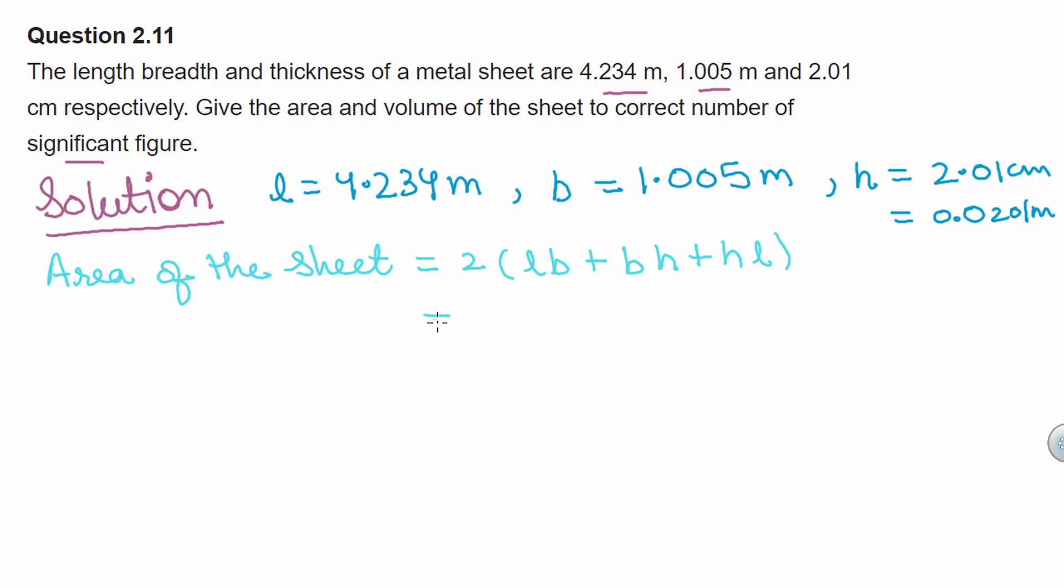Now putting in all these values of length, breadth and thickness we get 2 times 4.234 into 1.005 plus 1.005 times 0.0201 plus 0.0201 times 4.234 m whole square.